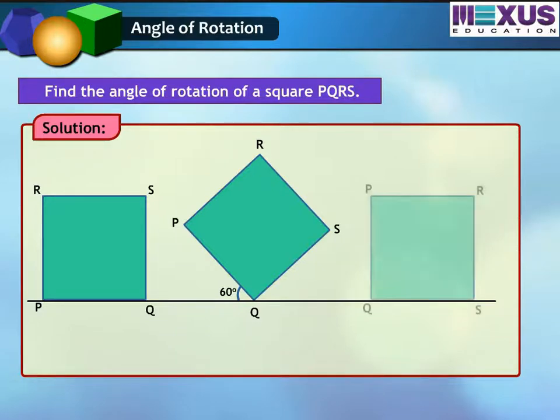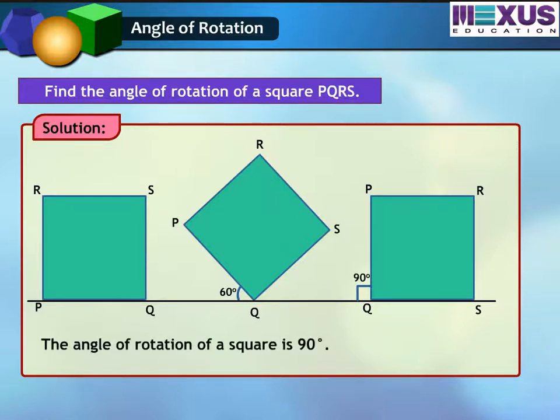Now, we will rotate the square to 90 degrees. After rotation, we will get the same figure of a square as we took earlier. So, we can say that the angle of rotation of a square is 90 degrees.